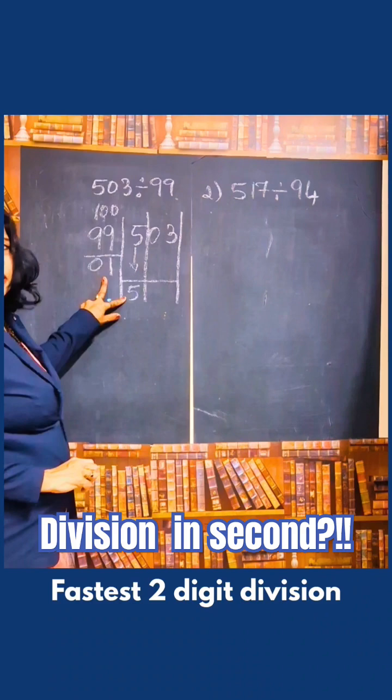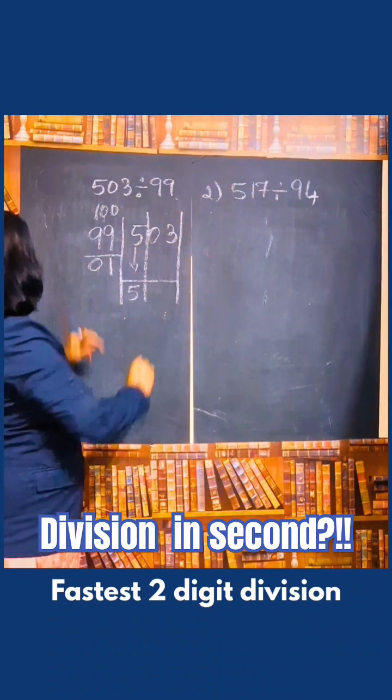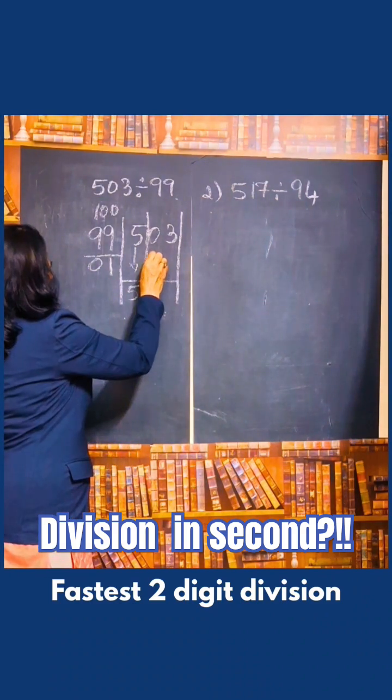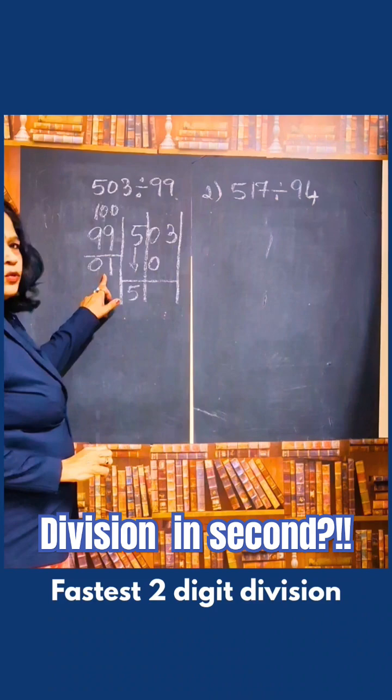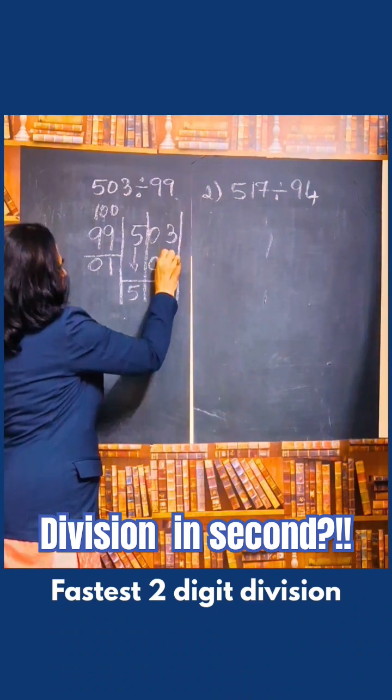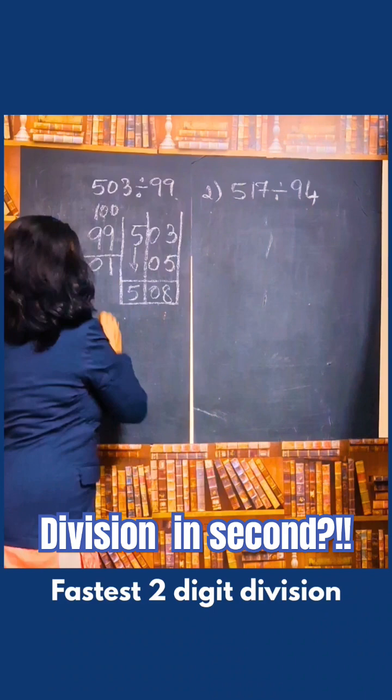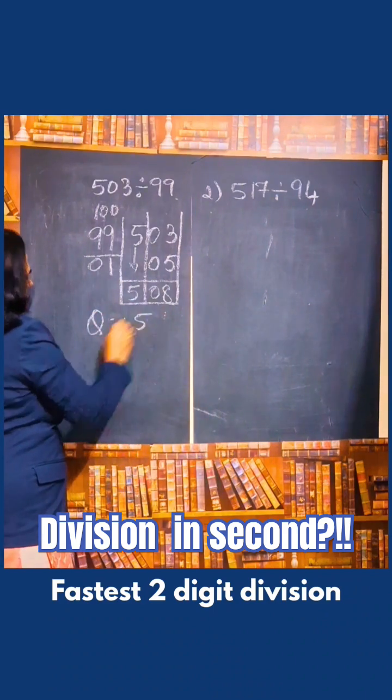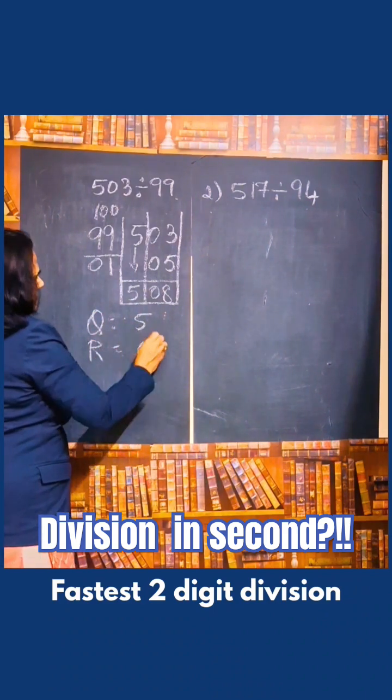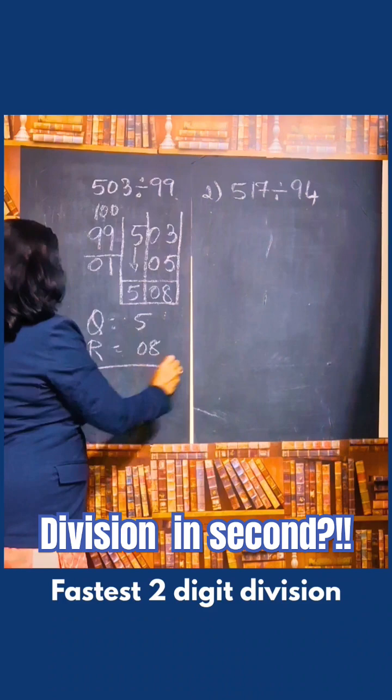And multiply this with the difference. 5 into 0 is 0. 5 into 1 is 5. Add it now: 0, 8, 4. Quotient is equal to 5, remainder is 08. That's it.